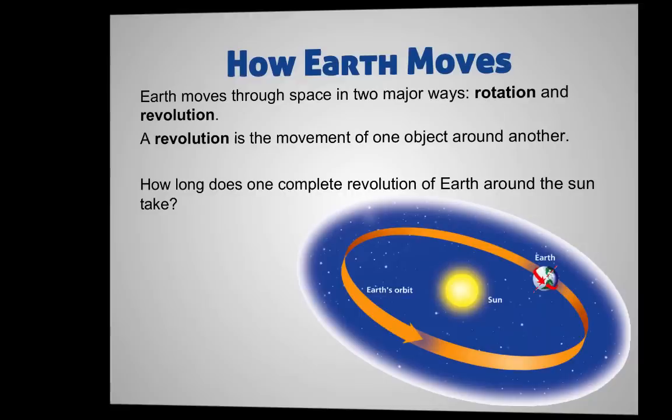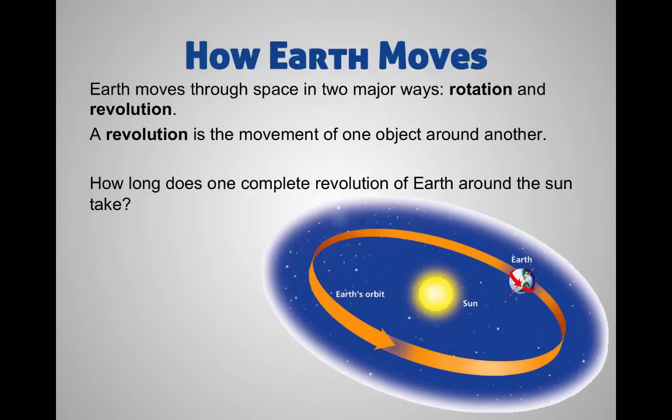Starting off with how Earth moves, we know that Earth moves in space in two major ways: rotation and revolution. Revolution is the movement of one object around another. We see in the picture there that the Earth is moving all the way around the Sun. You should know that the Moon also does the same going around the Earth, as do all moons around planets and all the planets around stars. They are revolving, going through one revolution, one object around the other.